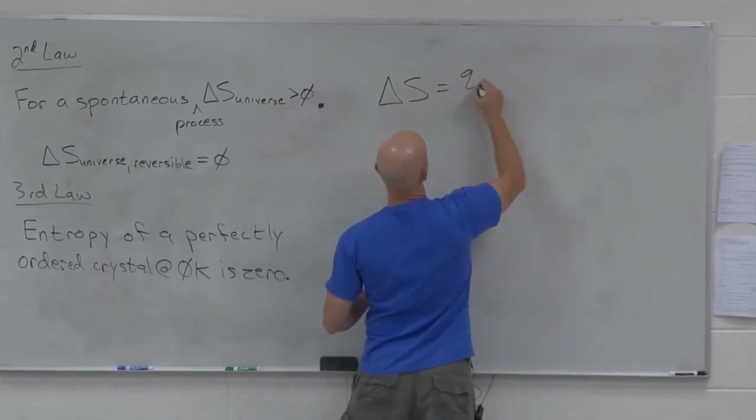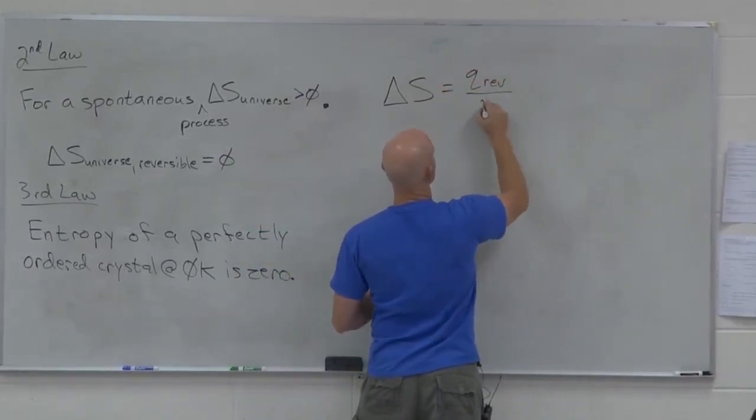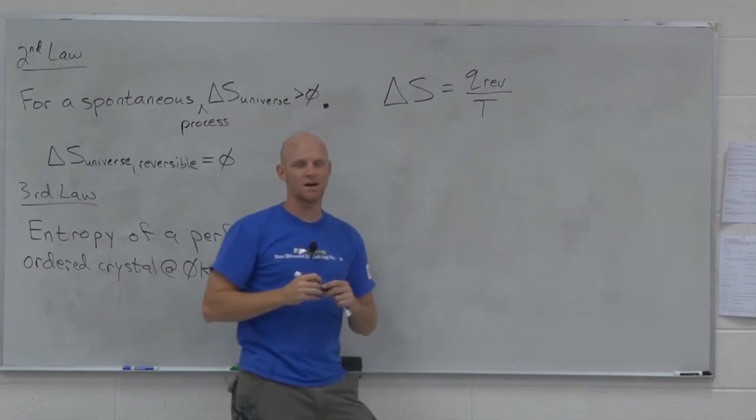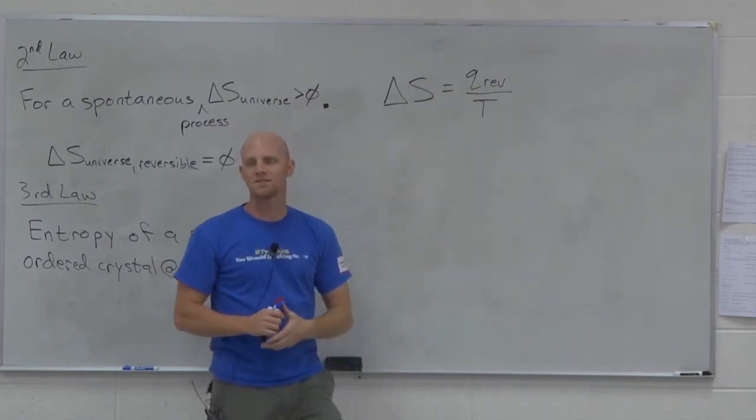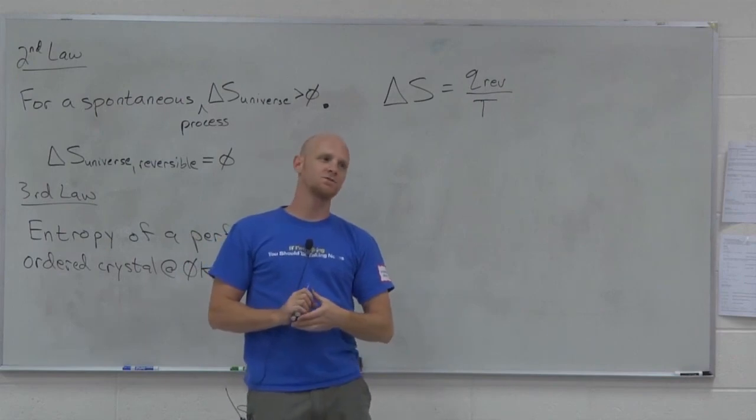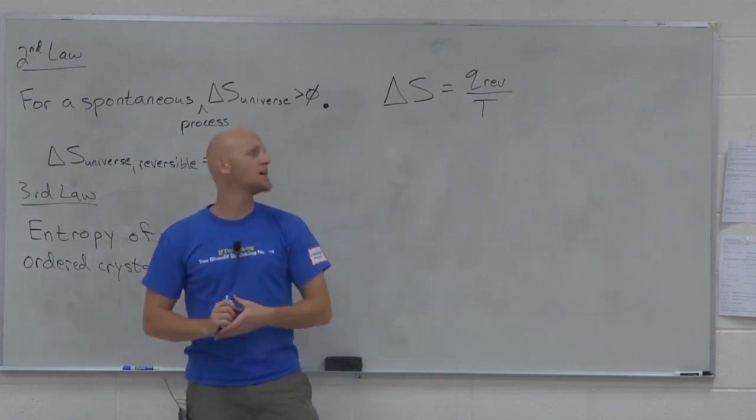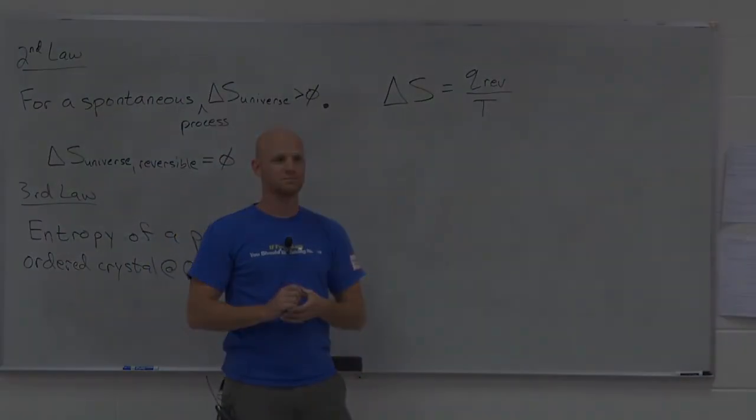And we're going to define it as delta S in this case. And delta S is equal to Q of the reversible process over the temperature at which it's carried out. This assumes it's being done at constant temperature. That is the actual mathematical definition of entropy. We are going to use over and over and over and over again.